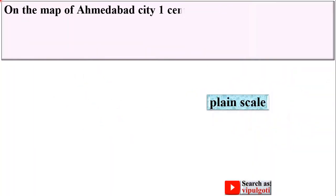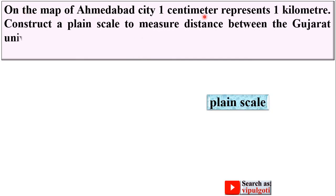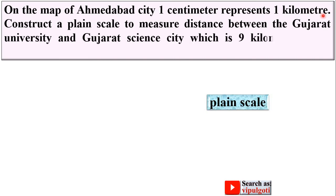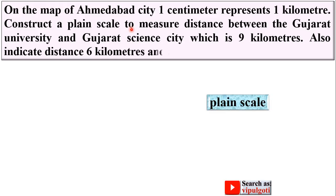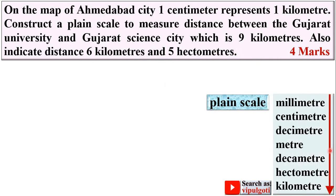Let's see the description in detail. On the map of Ahmedabad city, one centimeter represents one kilometer. Construct a plane scale to measure the distance between Gujarat University and Gujarat Science City, which is nine kilometers. Also indicate the distance six kilometers and five hectometers on the scale.